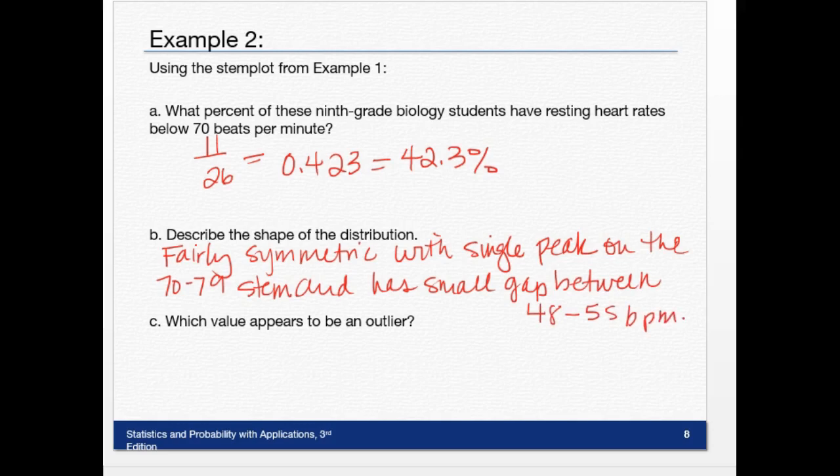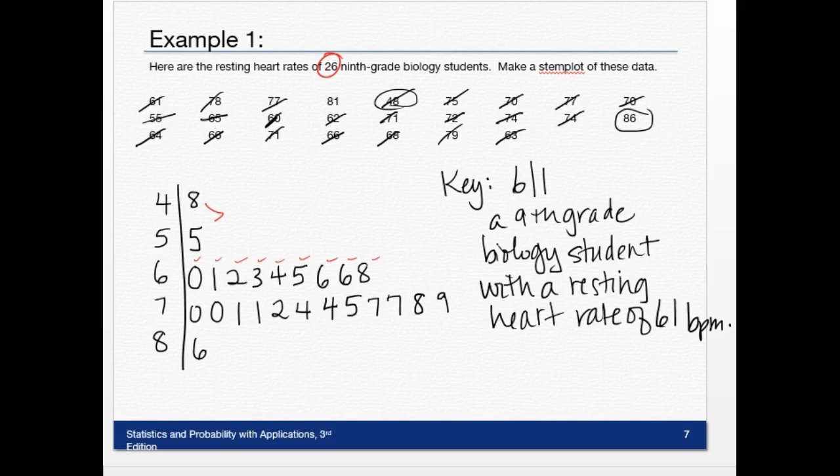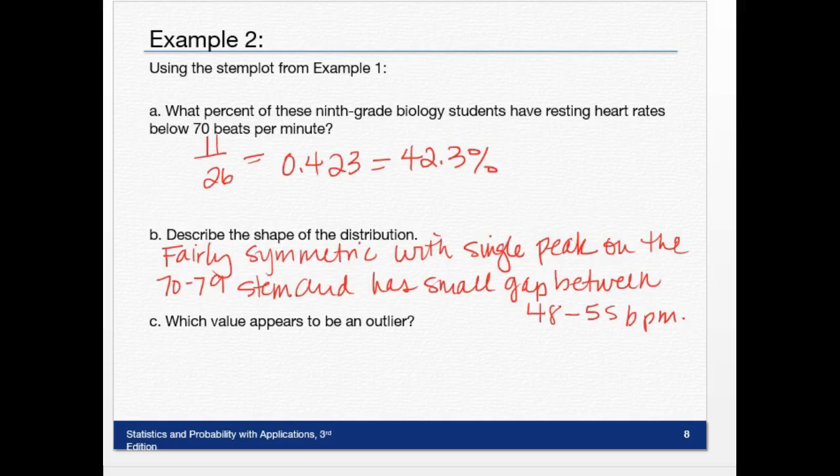Question C: What value appears to be an outlier? If you look at it, this 48 over here could be an outlier. In later videos we're going to show you how to know if it really is, but right now we're just kind of guesstimating which one's more separated from the rest of the data. The 48 is the most separated, so we would say that 48 beats per minute appears to be an outlier. That's what you're going to do—you're going to build some stem plots and describe them in the same way we did here in the video. Good luck, and we'll see you guys.